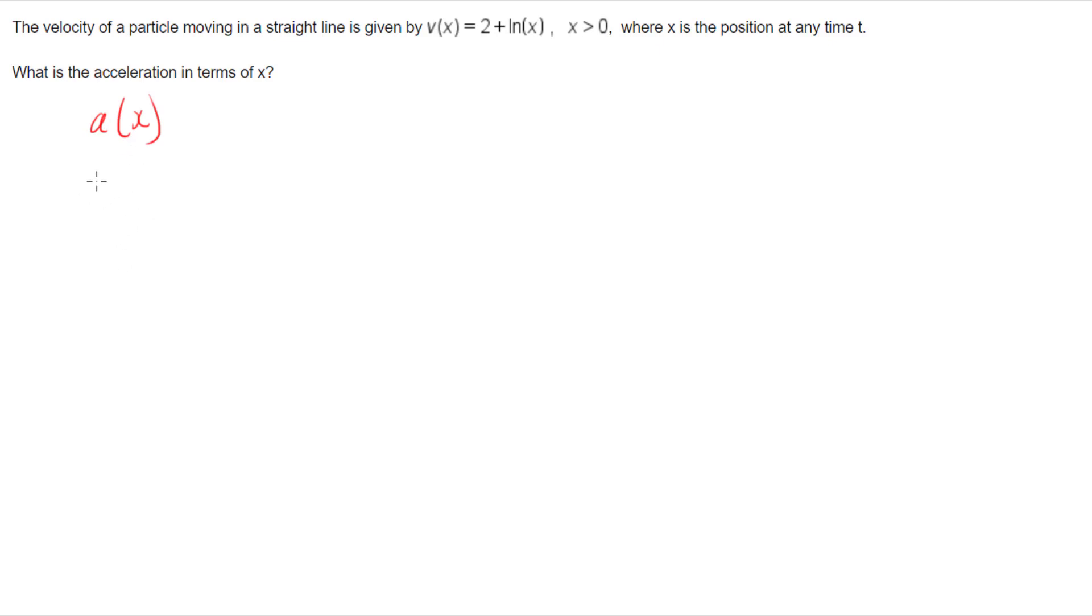Now I know that our velocity is a function of position, which is 2 + ln(x). So how do I link these two together? Well, if I think about acceleration, we know that acceleration is the derivative of velocity with respect to time.